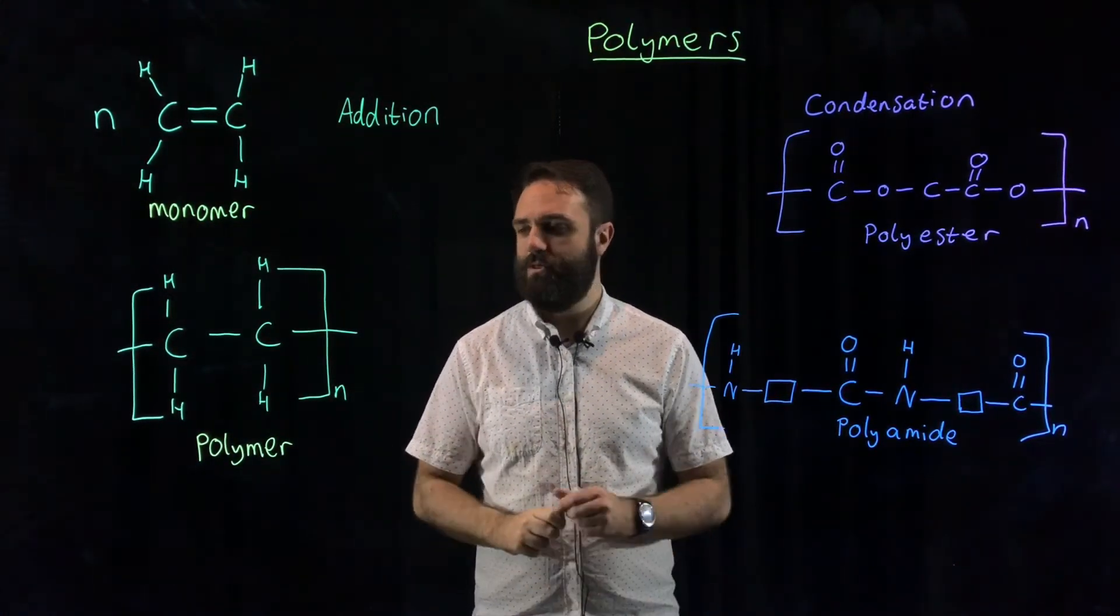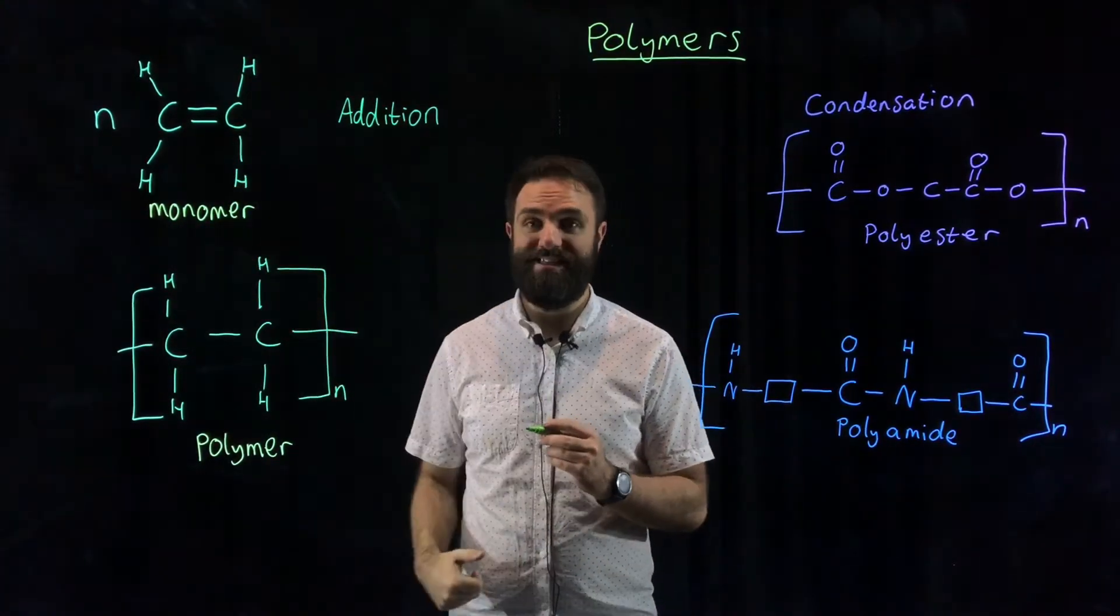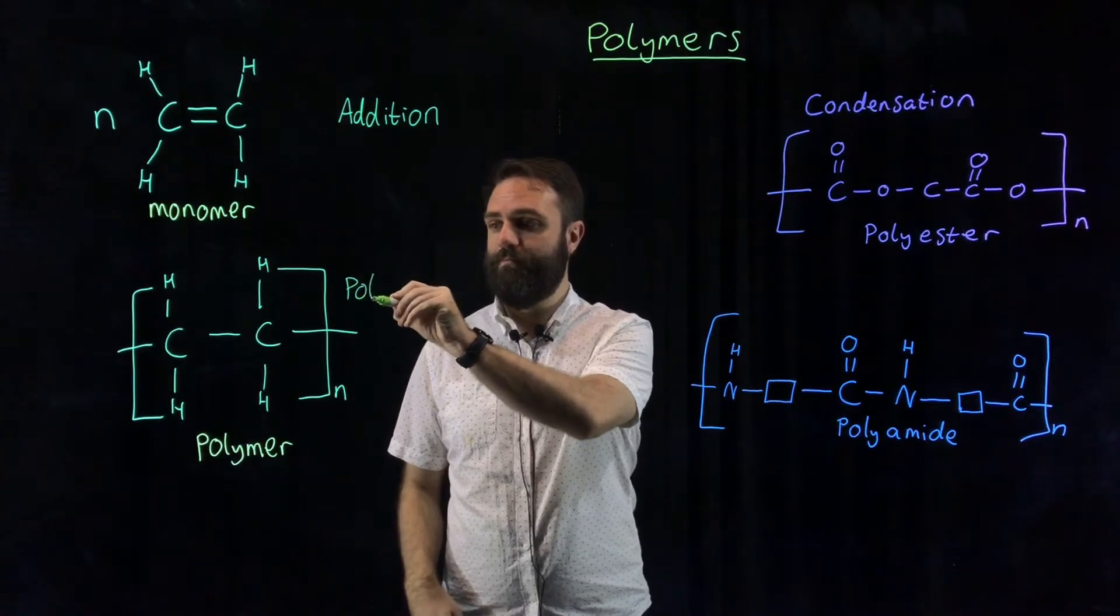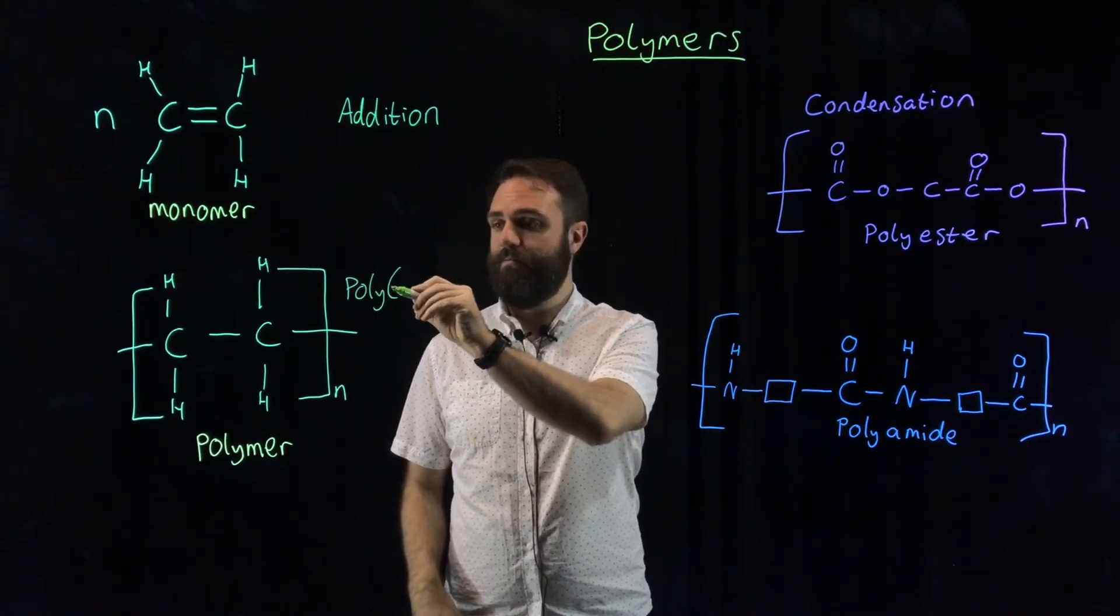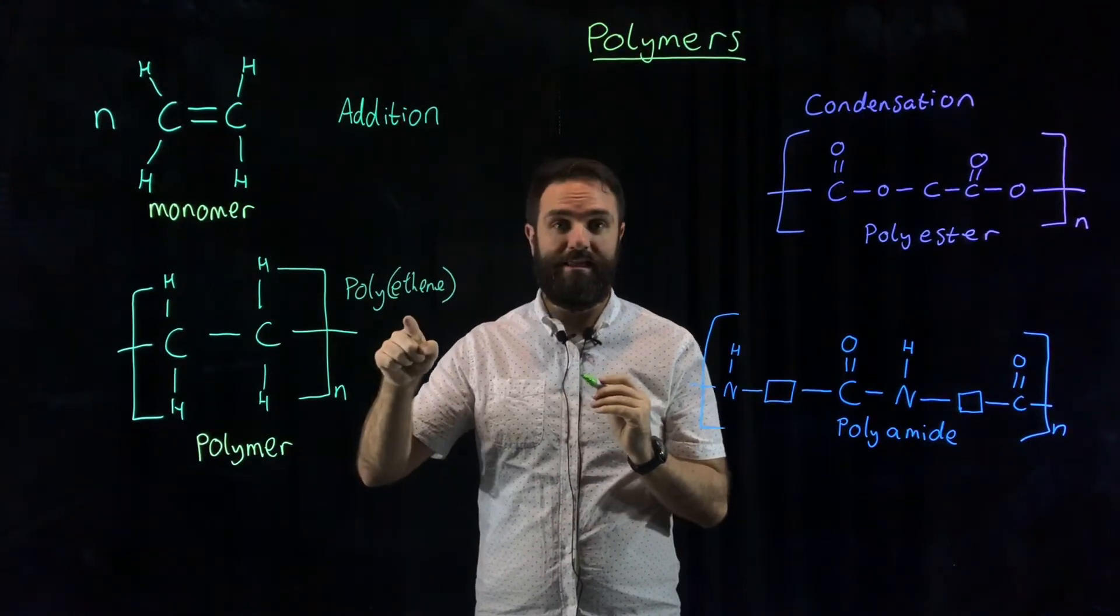How do we name these polymers? Well very simply, you take the name of the subunit, which in this case is ethene, you put the word poly, put a bracket, and put ethene. So polyethene is made from ethene.